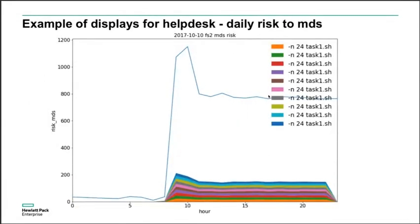This is another plot of risk to the MDS on the file system on the same day, which is even more interesting. We are showing only the top 10 applications. This is a task farm — a single application run as a job array with hundreds or thousands running at the same time, starting and ending simultaneously. These applications each have very low individual risk, but since thousands run at the same time — all opening and closing the same files simultaneously — they can cause considerable combined risk and actually bring down a file system. This was previously very difficult to analyze.